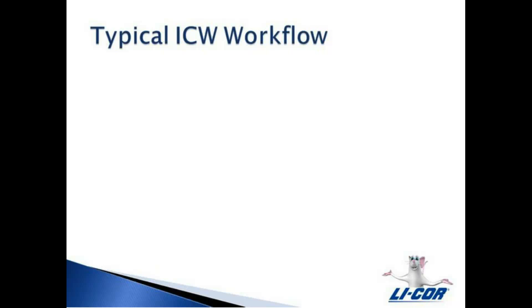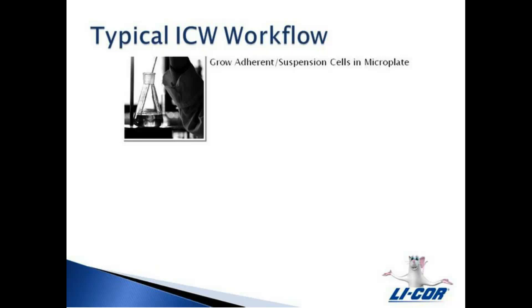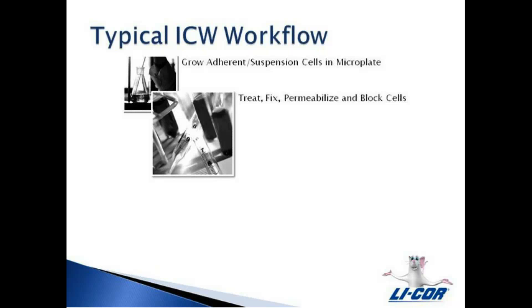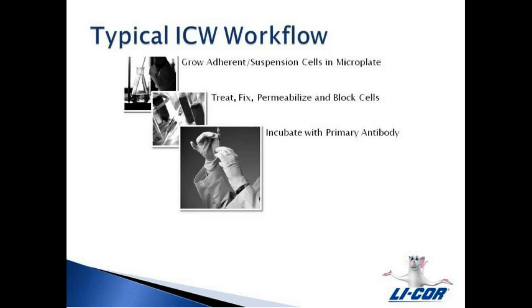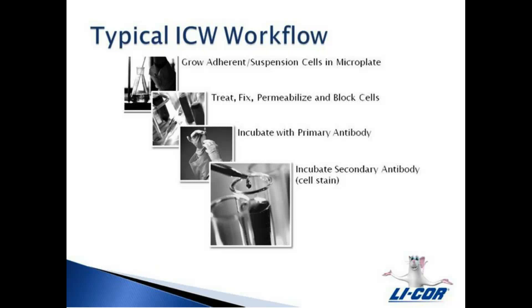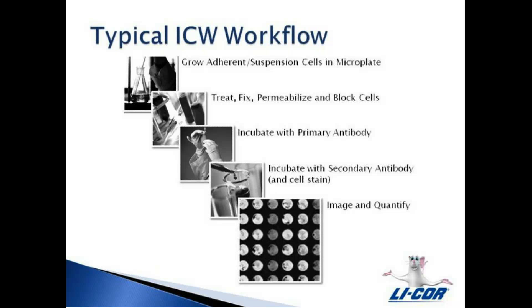A typical InCell Western workflow looks like this. First, grow a monolayer of your cells in a microplate. Second, treat your cells with the inhibitor or stimulant. Fix and permeabilize the cells, then block. Third, incubate the primary antibody. Fourth, incubate the secondary antibody, or use a cell stain. And finally, image and quantify.